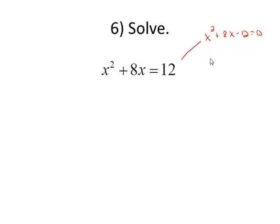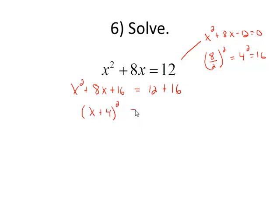To complete the square, we have to take that coefficient of 8, divide it by 2, and square it. We'll add this number to both sides. Well, 8 divided by 2 is 4, and 4 squared is 16. So I'm going to add 16 to both sides. Factor the left side. That factors to be x plus 4 times x plus 4, or x plus 4 squared, equal to 28.